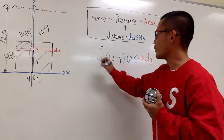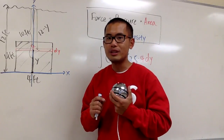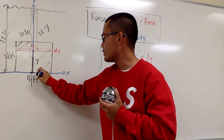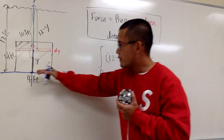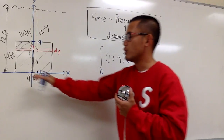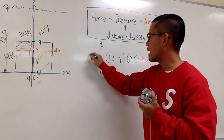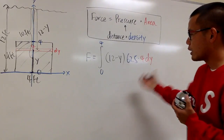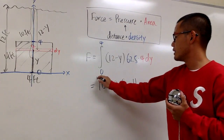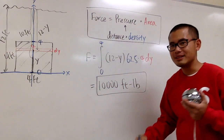Same story as before — we integrate all possible red rectangles. The first rectangle is at the bottom where y equals 0, and we go up to the top where y equals 4. So we integrate 62.5 times (12 minus y) times 4 dy from 0 to 4. You'll still get 10,000 foot-pounds. It's not tricky because the width is always equal to 4 — and that's the beauty.